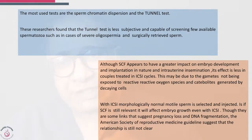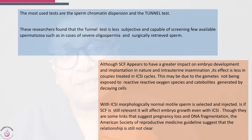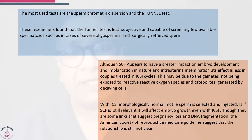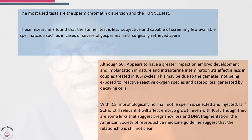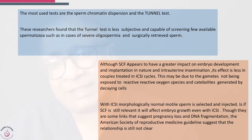Two of the commonest tests used are the sperm chromatin dispersion test and the TUNEL test. Researchers found that the TUNEL test is less subjective and capable of screening available spermatozoa, even in cases of severe oligospermia and surgically retrieved sperm.